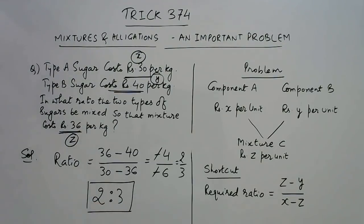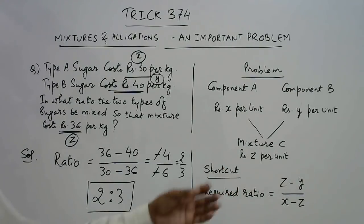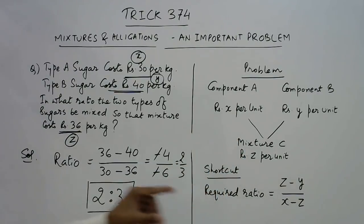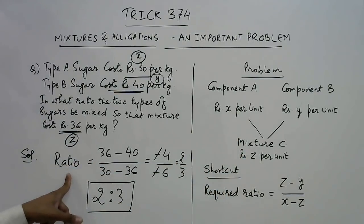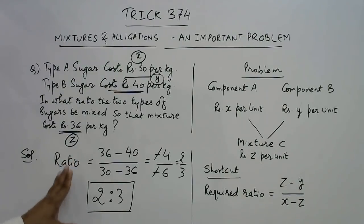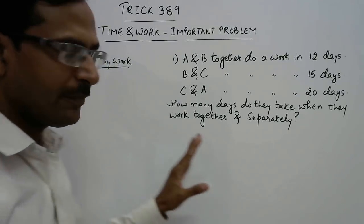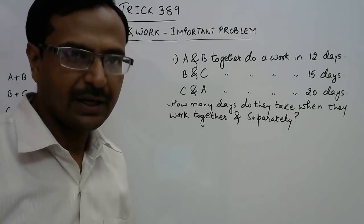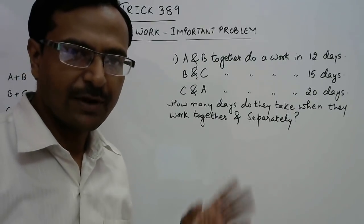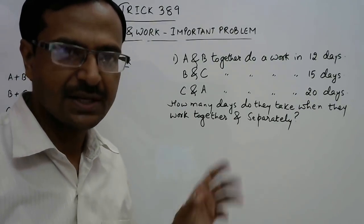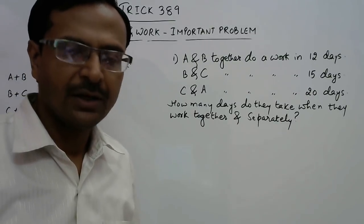Very very simple method and a very interesting shortcut. I leave it to you to try the traditional method and compare how much time it takes versus this shortcut approach. I am sure you will save a lot of time. You can verify the answer as 2 ratio 3. If you practice this for 5 minutes, you will be able to solve it in about 10 to 15 seconds in the exam.